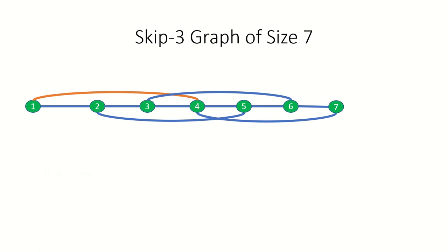They are 1 mod 3, so all numbers 1 mod 3 can be reached by the first vertex just by taking the biggest possible steps our graph allows. Therefore if n is one more than a number divisible by 3 we can reach it in some number of skip 3 steps. To get to the seventh vertex it took us two steps and to get to the fourth vertex took one step, so it seems promising that n minus 1 over 3 would be the expression we're looking for if n is 1 mod 3.